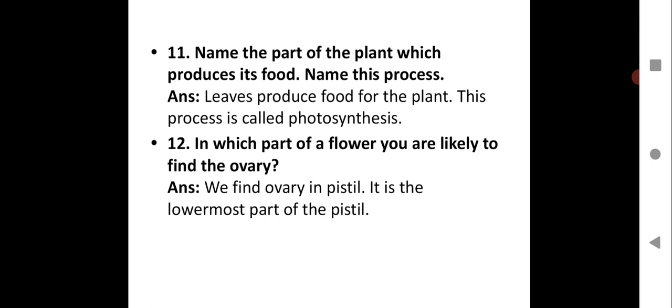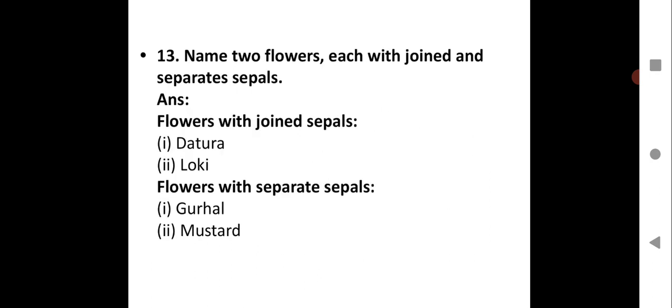Question 12: In which part of a flower are you likely to find the ovary? We find the ovary in the pistil, which is the female reproductive part of the flower. The ovary is the lowermost part of the pistil. Question 13: Name two flowers each with joined and separate sepals. Flowers with joined sepals: datura and loki. Flowers with separate sepals: gurhal and mustard.